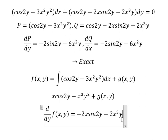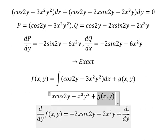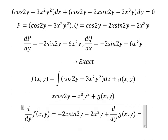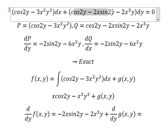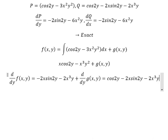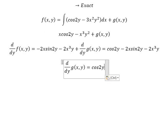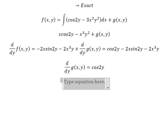Next we have d over dy of g(s, y). We know that everything in here equals to this one. Next we simplify — this one and this one cancel — and now we just have this one left. Next we integrate both sides.